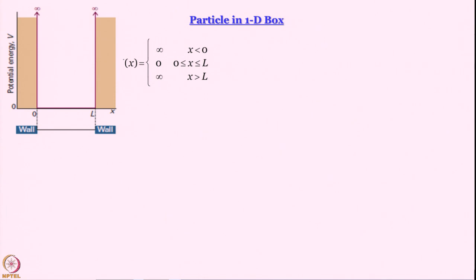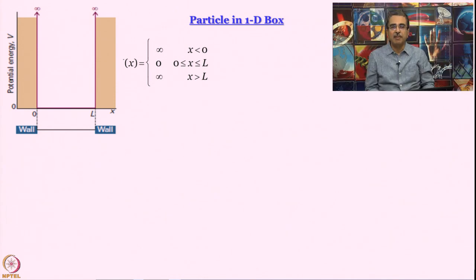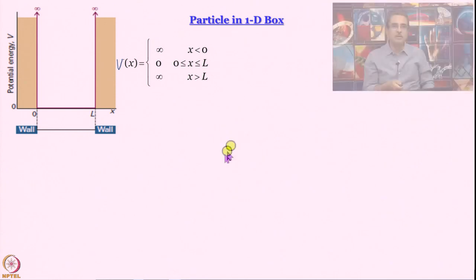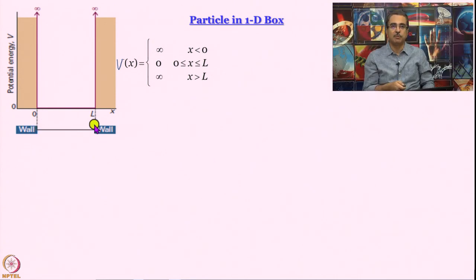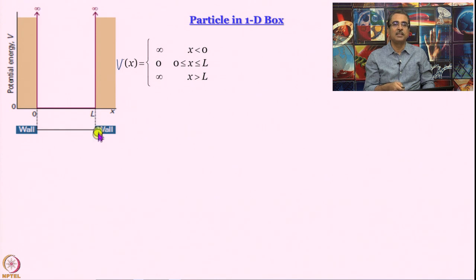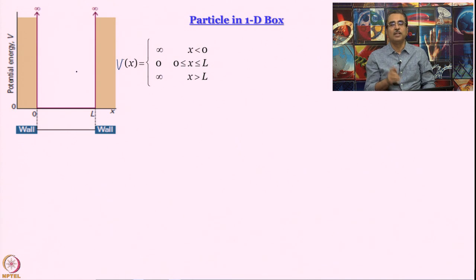Let us say we put a particle in a box defined by two walls with an infinite potential barrier. The potential V(x) is 0 between x = 0 and x = L. For x less than 0 or x greater than L, the potential is infinite. At x = 0 and x = L there is a discontinuity — the potential suddenly becomes infinity. This is called a particle in a box.